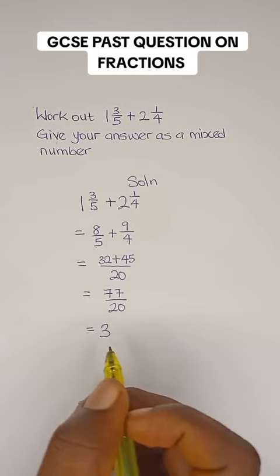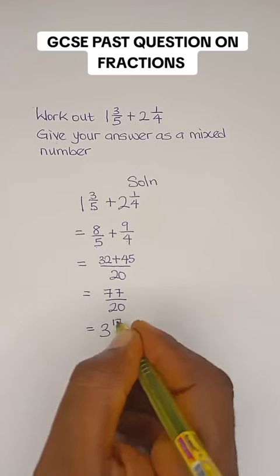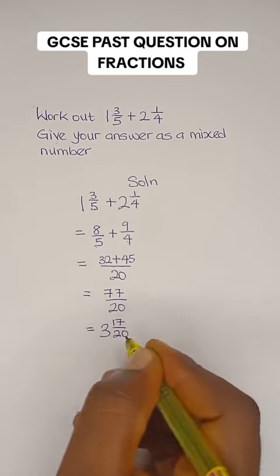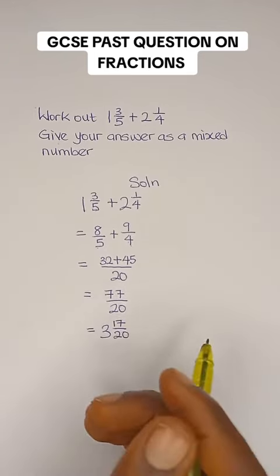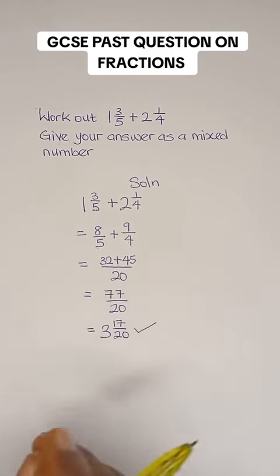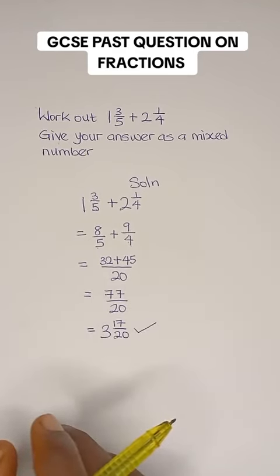What would be our numerator? Our numerator is 17, over 20 as the denominator. So we get 3 17/20. This is the answer to this question. Hope you enjoyed the video. See you in the next one.